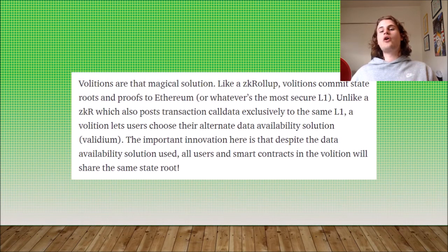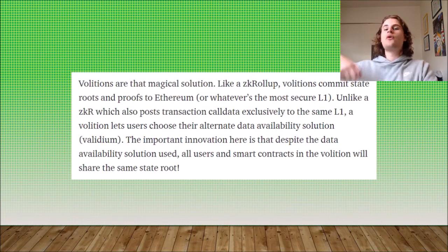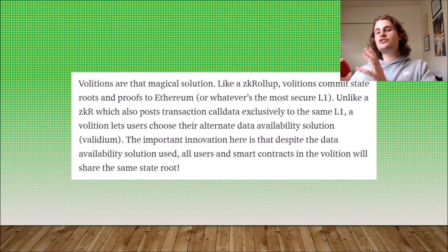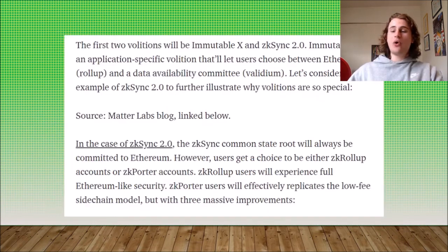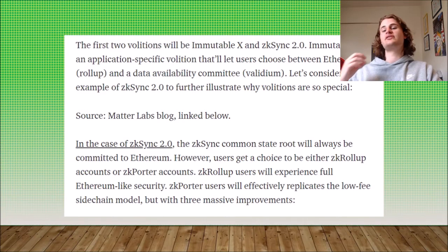This is a massive innovation because essentially what the Volition can do is choose to post the most important data to the Layer 1 and the less important data off the Layer 1. A Volition will say: the proofs need to be posted to the Layer 1; this call data is more important, so we'll post it to the Layer 1; and we'll post this other call data, which is less important, off-chain. Essentially, this frees up space on the Layer 1 and makes it move a lot quicker and faster, allowing the Volition to bring extremely cheap fees to its users. There are already Volitions on top of Ethereum — one of these is Immutable X, a Layer 2 designed for NFTs where it costs zero dollars to mint an NFT, showing how cheap a Volition can actually be.